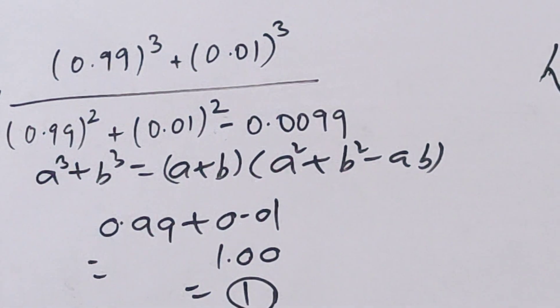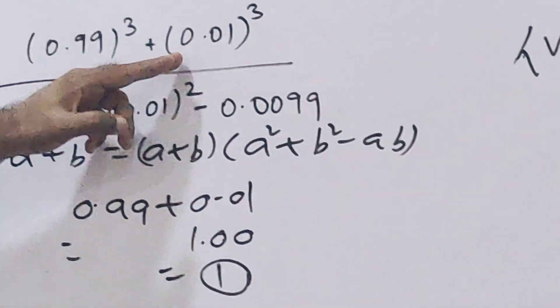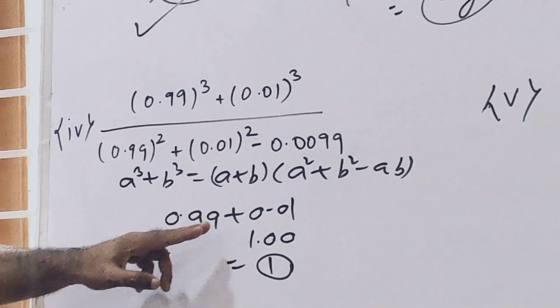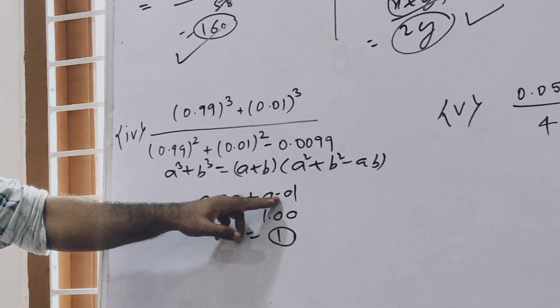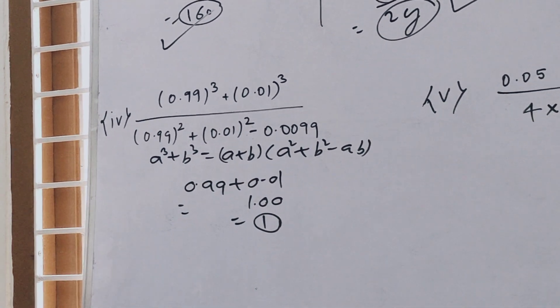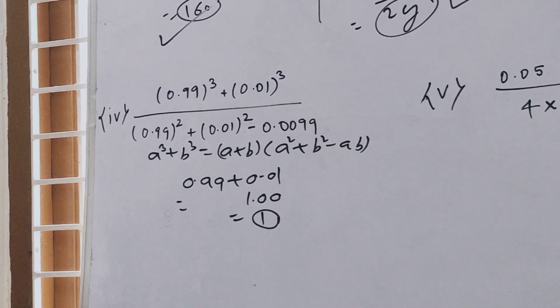So the denominator will cancel out, and you will get only a plus b. So 0.99 plus 0.01 equals 1, and that is the right answer.